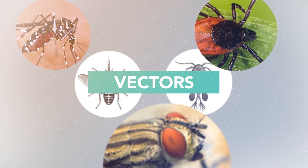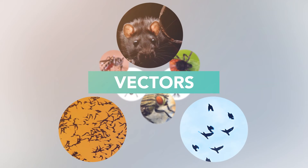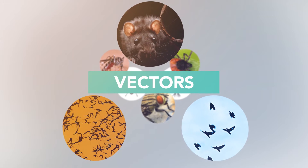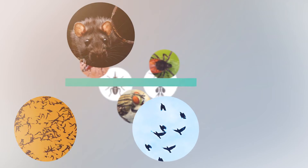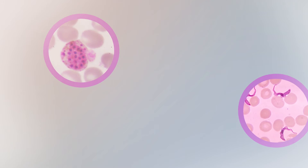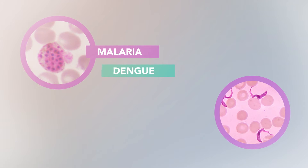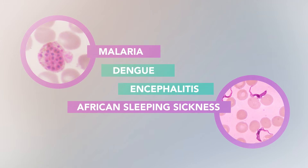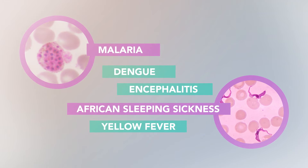Other non-arthropod vectors can include rodents, such as rats, certain bats, and several species of wild birds. Different vectors carry different diseases, such as malaria, dengue, encephalitis, African sleeping sickness, and yellow fever.